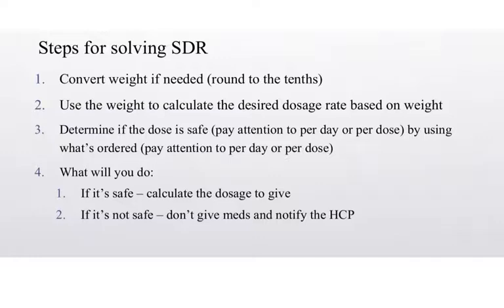Use the weight to calculate the desired dose range — that's the low and the high, or the minimum and maximum for that safe dosage range. It's going to be based on their weight, and they'll give you an amount of time, either per day or per dose. When you determine for step three if it is safe or not, pay very careful attention to whether the safe dose range is per day or per dose, because what is ordered is always per dose, but you may have to change it to per day.